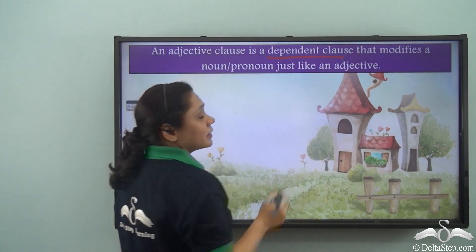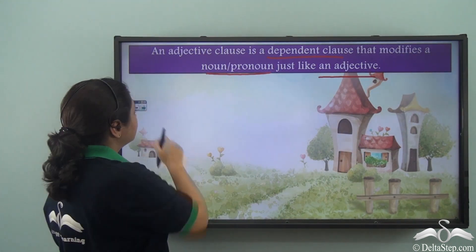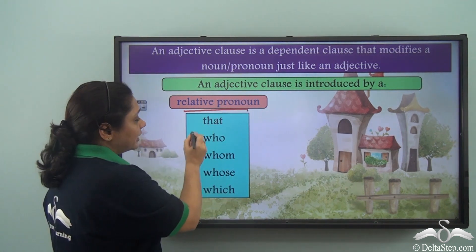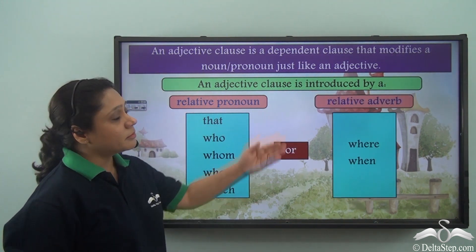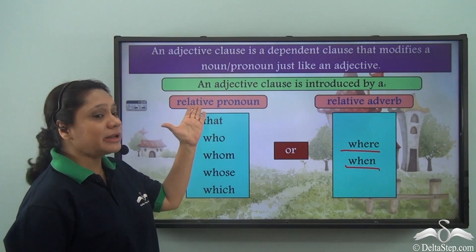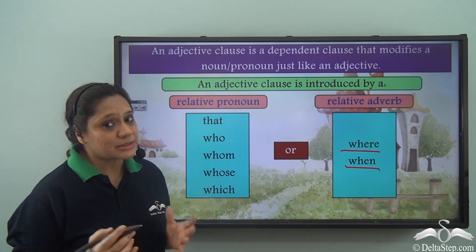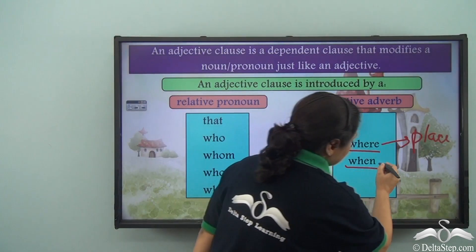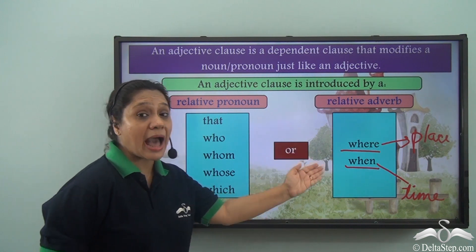This clause is acting as an adjective because it is describing 'eyes,' just like the adjective 'blue.' So this clause is known as an adjective clause. An adjective clause is a dependent clause that modifies a noun or a pronoun, just like an adjective. An adjective clause can be introduced by a relative pronoun like 'that,' 'who,' 'whom,' 'whose,' 'which,' or by a relative adverb like 'where' or 'when.' Relative adverbs are actually relative pronouns which act as adverbs when joining two clauses — 'where' tells us about the place and 'when' tells us about the time.